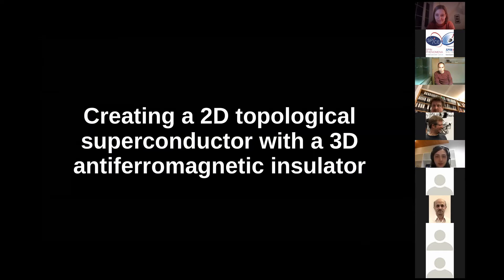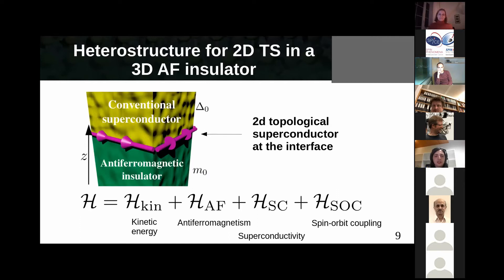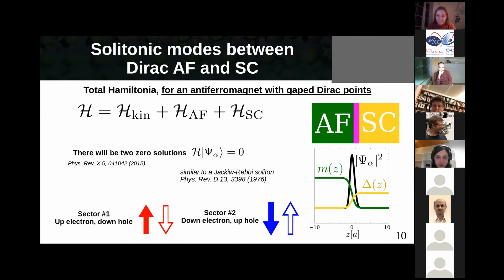The first story is how to create a two-dimensional topological superconductor starting with a three-dimensional antiferromagnet. The idea is fairly simple: we take the right antiferromagnetic insulator, put it on top of a conventional superconductor, and something happens at the interface that gives us a topological superconductor. We consider a system with kinetic energy, antiferromagnetism in the antiferromagnetic part, superconductivity in the superconducting part, and spin-orbit coupling everywhere. The first challenge is creating helical states from the antiferromagnetic insulator, which originally had a gap and no helical states whatsoever.